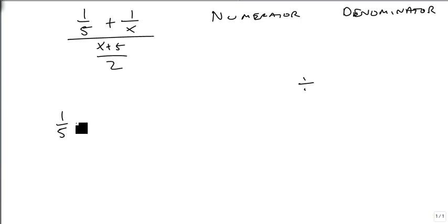So 1 over 5 plus 1 over x has an LCD of 5x, so this becomes x over 5x plus 5 over 5x. And so my numerator is x plus 5 over 5x.